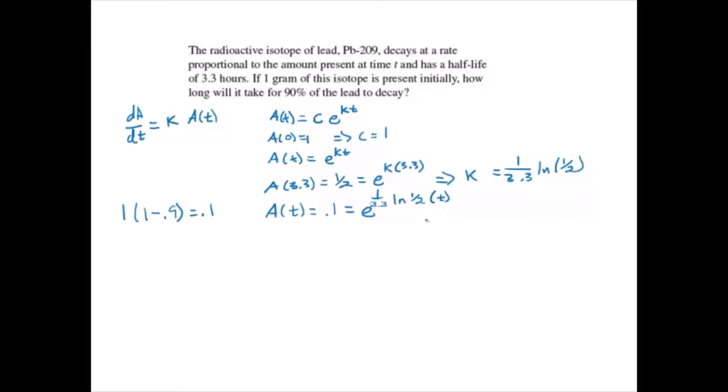We're solving for t. This will give us t over 3.3 times the natural log of 1/2 is equal to the natural log of 0.1, which will give us t is equal to 3.3 times the natural log of 0.1 over the natural log of 1/2, which is approximately equal to 10.96 hours.